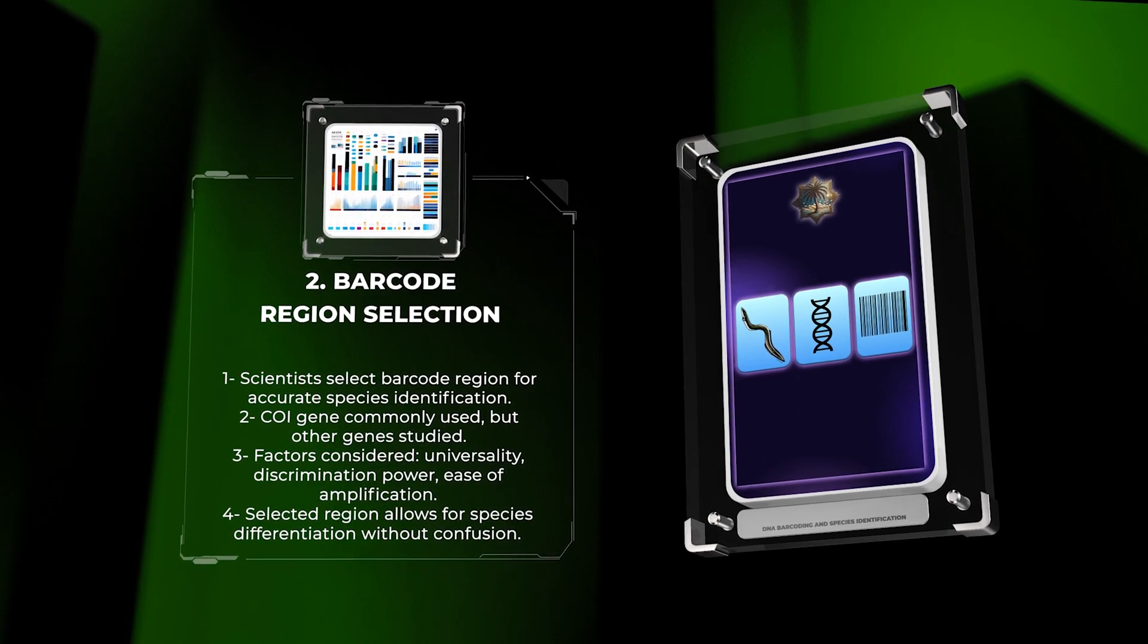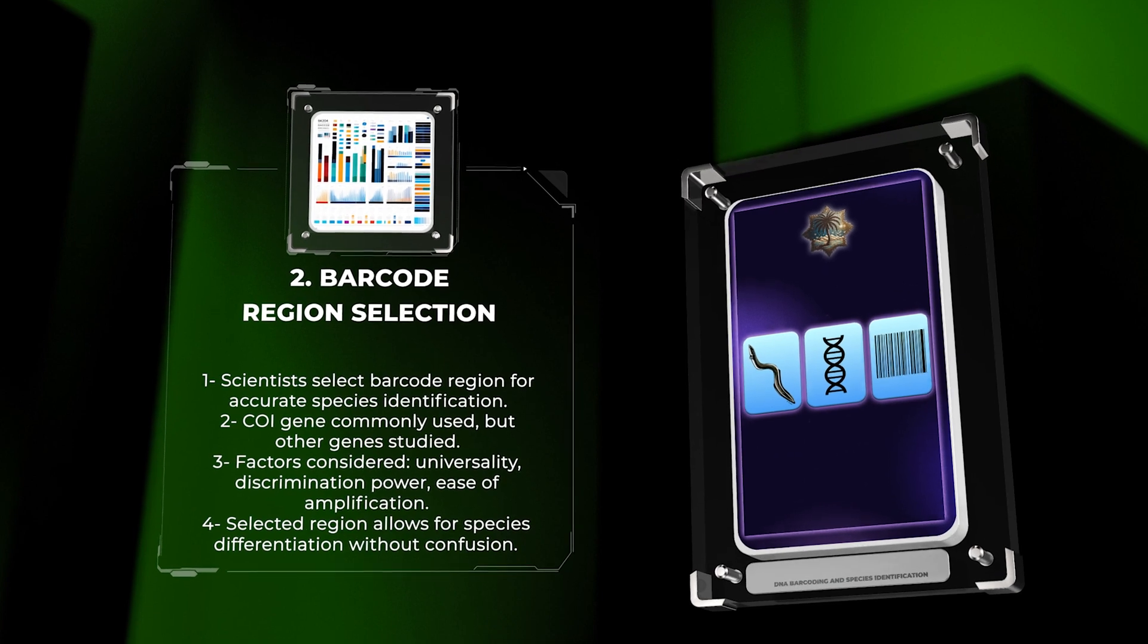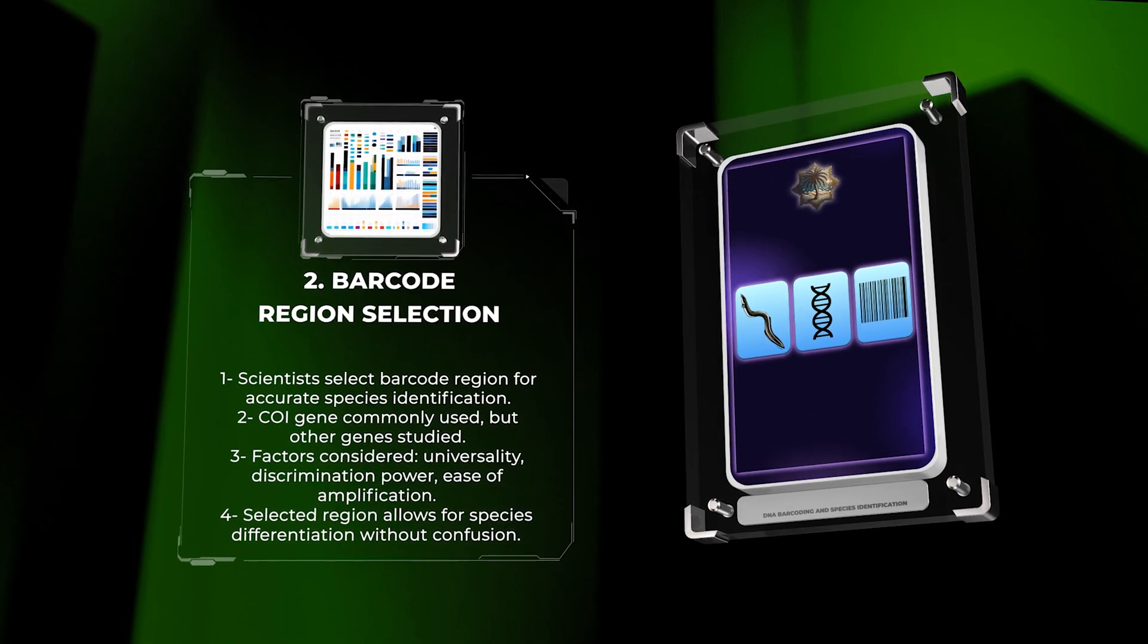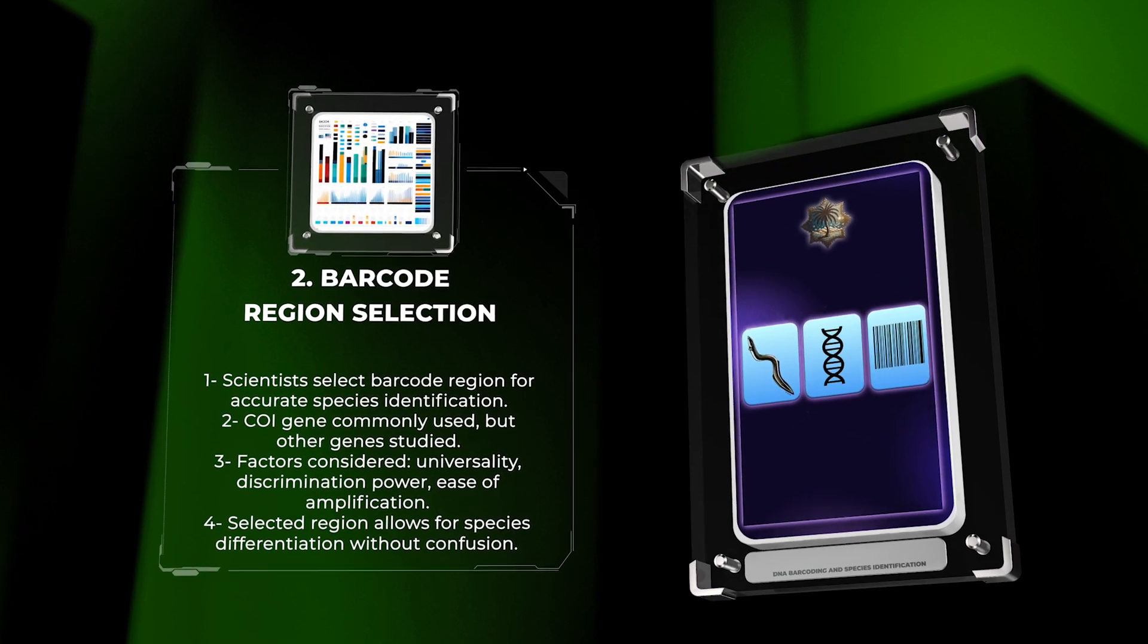Factors like universality, discrimination power, and ease of amplification must be considered. This ensures that the selected region allows for species differentiation without causing confusion within species.